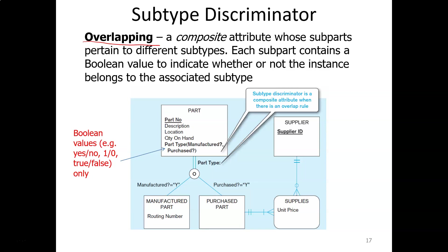When the supertype-subtype meets the overlap rule, you create a composite attribute whose subparts pertain to different subtypes. For the parts example with manufactured and purchased subtypes, you create a composite attribute called part type with two boolean components: manufactured? and purchased?. If a part is only manufactured, values are yes and no. If it is both, values are yes and yes. If it is only purchased, values are no and yes.